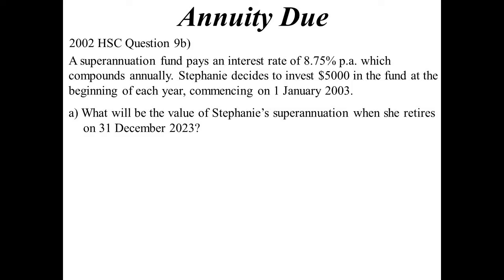Let's have a look at annuity due — HSC question, 2002. Superannuation is a great example of an annuity due, because it's usually paying the same amount in at regular intervals. This particular fund pays an interest rate of 8.75%, compounded annually. Stephanie decides to invest $5,000 in the fund beginning each year, commencing on the 1st of January 2003. What will be the value of the superannuation when she retires on the 31st of December 2023?